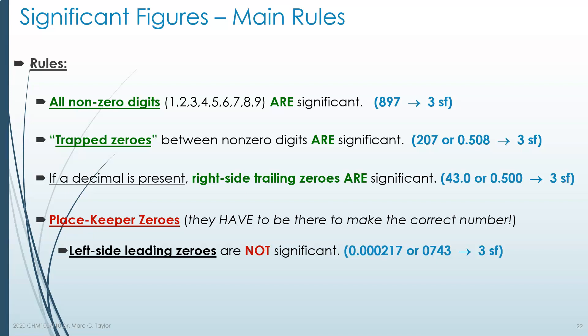Note that I said 'quality of the measurement,' not accuracy or precision, because in science, accuracy and precision have very specific meanings discussed in a previous video. Looking at another example: if you wrote 0743 and simply meant 743, you still do not count that zero as significant. It's a placekeeper filling in the thousands place. So each of these examples would also be three significant digits.